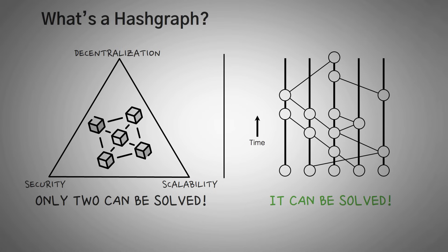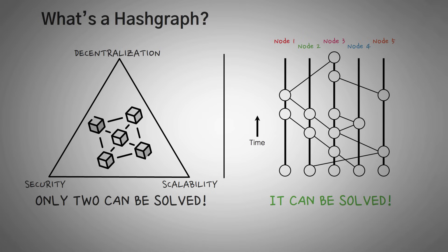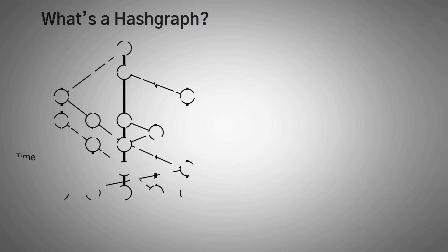It's a little complicated, but if you know how IOTA works, Hedera is quite similar. Also similar to a proof-of-stake blockchain, Hashgraph technology utilizes nodes, where anyone can host a node to help maintain the network. A node is software that stores and updates transactions and the ledger on someone's computer — so theoretically, even you could be a node.